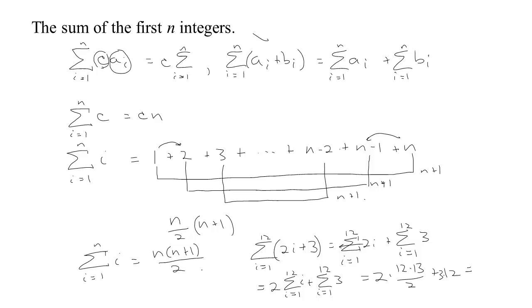So we can actually simplify a little bit. We have the 2's cancel here, so the sum is going to be 12 times 13 plus 12 times 3, factor out the 12, we have 12 times 16 there. And that's going to be 120 plus 72, so 192 for that sum.